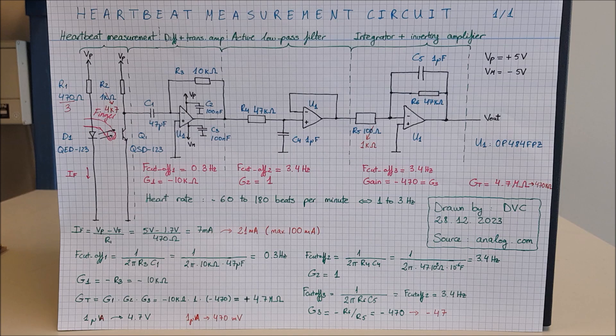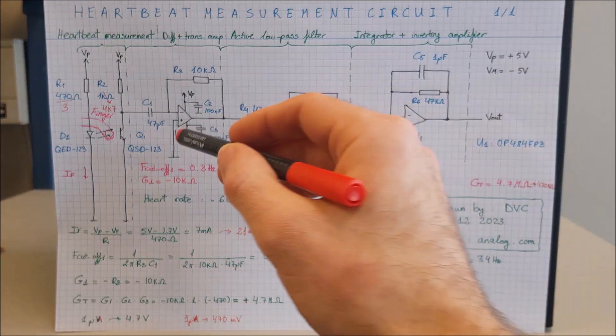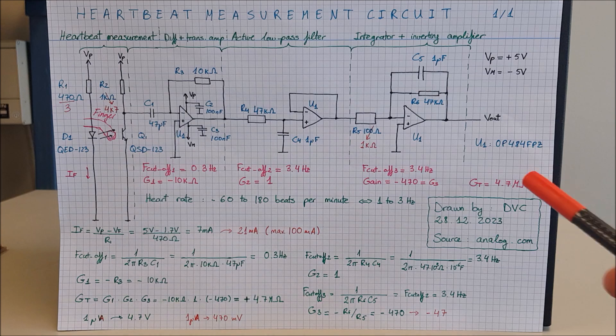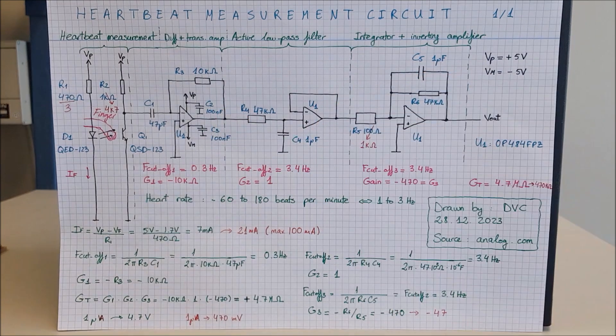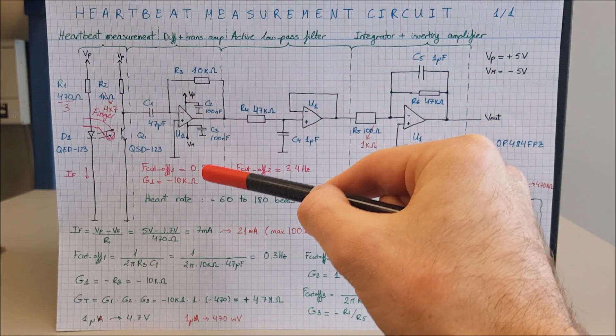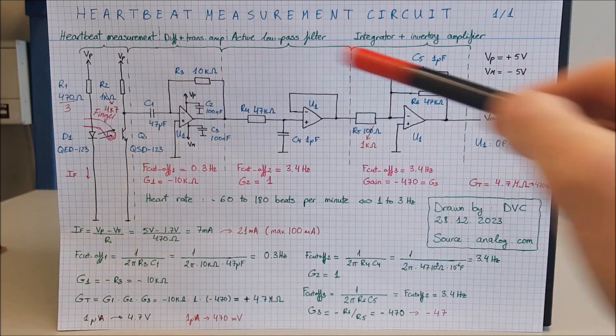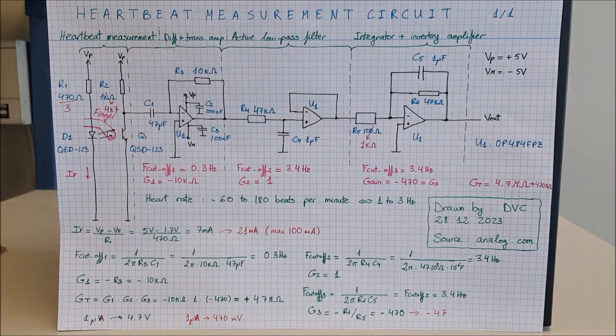Now all these triangles are the same operational amplifier, an OP484. I have bypassed it with 100 nF capacitors C2 and C3 and this is powered from plus minus 5 volts.